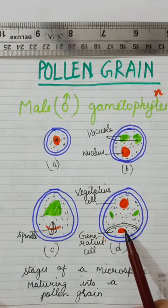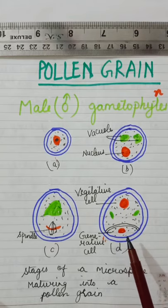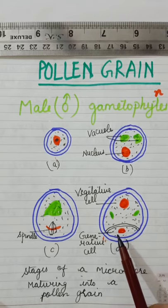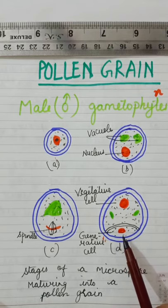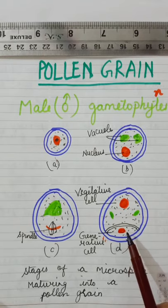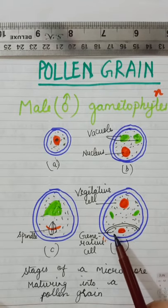Now a layer of callose (C-A-L-L-O-S-E) is developed around this generative cell. The generative cell then loses its contact with the wall of microspore.